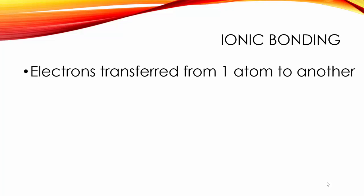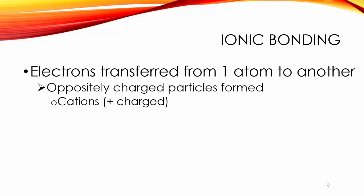In ionic bonding electrons are transferred from one atom to another. This means you get oppositely charged particles formed. Electrons have to go from one atom to another, they can't exist on their own. The one that loses electrons becomes positively charged and is called a cation. The atom that gains electrons is negatively charged and is called an anion.